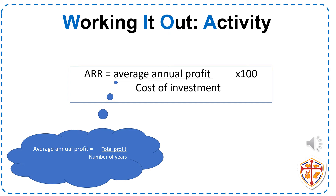Now let's work it out. In order to calculate average rate of return, you need to take the average annual profit and divide it by the cost of investment — which simply means how much you are looking to invest into this business — and times it by 100. However, please note that beforehand, in order to calculate the average annual profit, you have to take the total profit, which is simply adding up all the profit given to you, and divide it by the number of years.